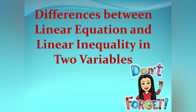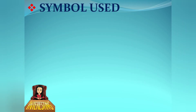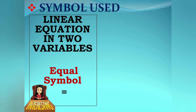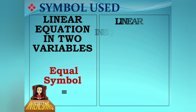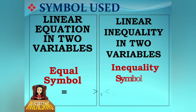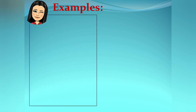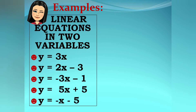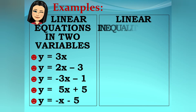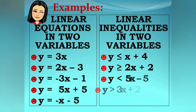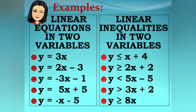Now for the differences. In terms of symbol used: linear equations in two variables use an equal sign, while linear inequalities in two variables use inequality symbols — greater than, less than, less than or equal to, and greater than or equal to. For example, linear equations include y equals 3x, y equals 2x minus 3, y equals negative 3x minus 1, y equals 5x plus 5, and y equals negative x minus 5. Linear inequalities include y is less than or equal to x plus 4, y is greater than or equal to 2x plus 2, y is less than 5x minus 5, y is greater than 3x plus 2, and y is greater than or equal to 8x.